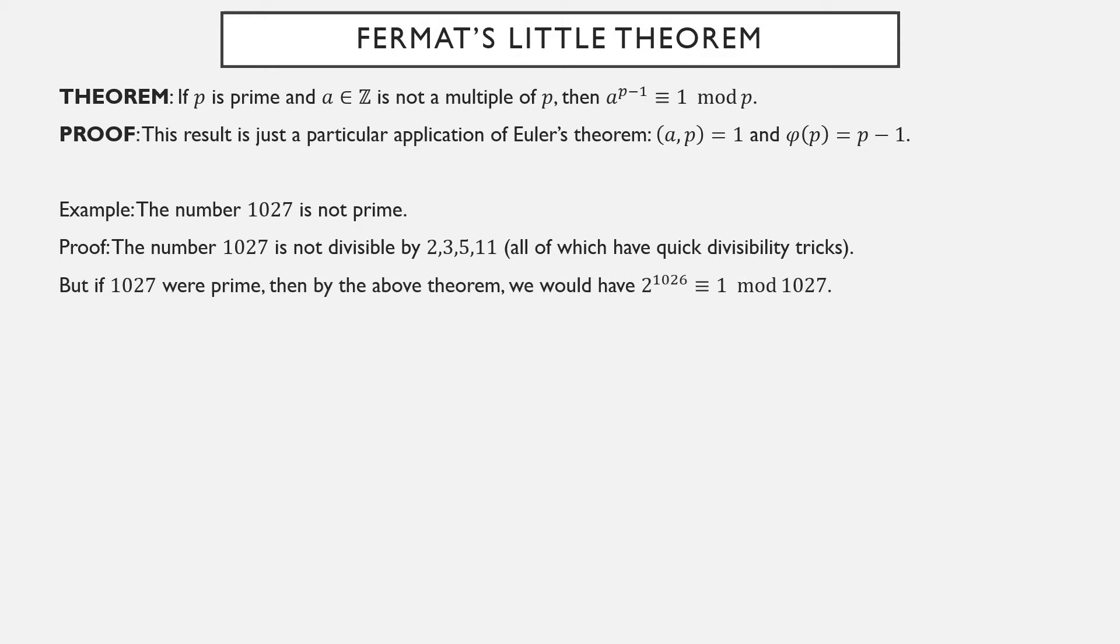Let's assume for the moment that 1027 is prime. Well, 2 is definitely not a multiple of 1027. So if 1027 is prime, then 2 to the 1026 should be equivalent to 1 mod 1027. So if 1027 were prime, this would be true.